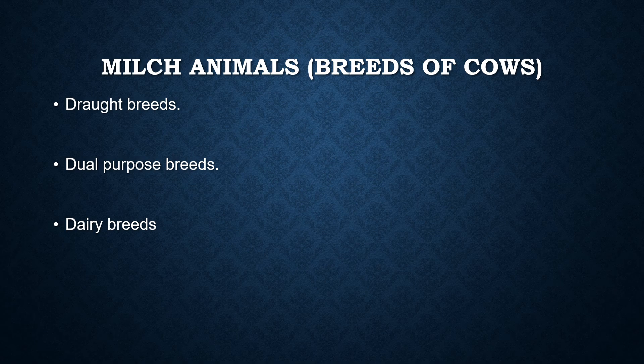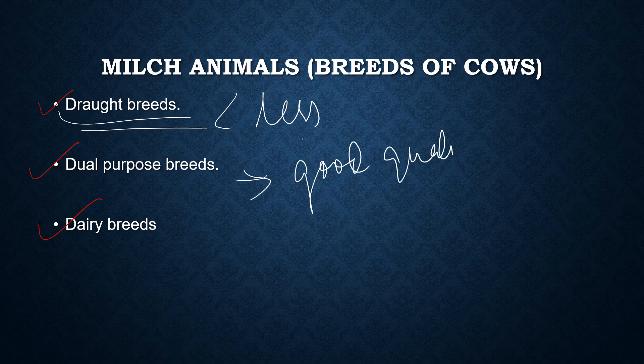Looking at the breeds of cows, the first category is drawed breeds — males are primarily used for pulling bullock carts, plowing land, and transporting materials, but their females yield less milk. The second category is dual purpose breeds — they yield quite good quality milk, and their bullocks are good for drawed purposes too. Examples include breeds from Haryana, Dangi, and Tharparkar.